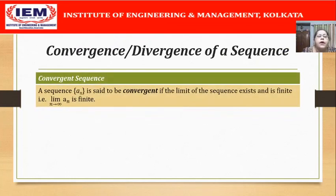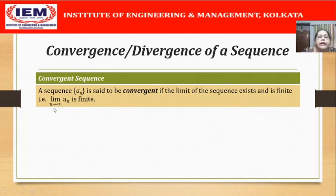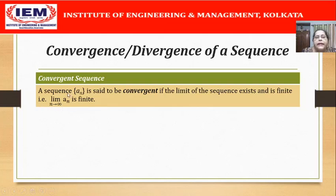A convergent sequence is defined as a sequence for which the limit exists and is finite. That is, lim a_n as n tends to infinity is a finite quantity. In other words, as n approaches infinity, the nth member a_n approaches a finite number.